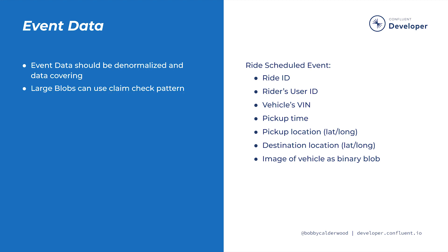There's one exception to this rule for large blobs of binary data like images, sounds, or videos that we don't want bloating our event storage. In this case, we can use the claim check pattern, where we store the blobs in a separate location from our event store, and then include the URI for retrieving the blob in the event data, rather than the blob itself. All other data should be included inline within the event.